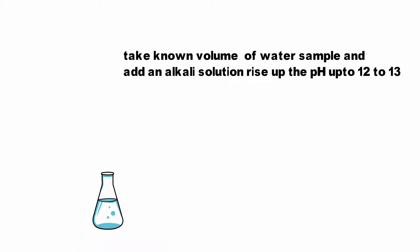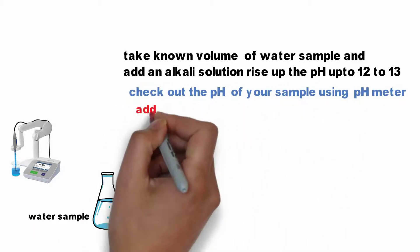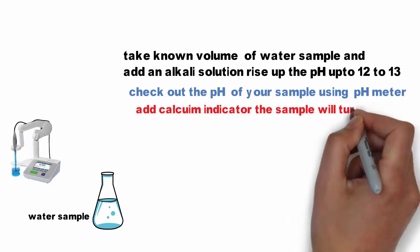Take a known volume of water sample and add an alkali solution to raise the pH up to 12 to 13. Check the pH of your sample using a pH meter. Add a calcium indicator to your sample.